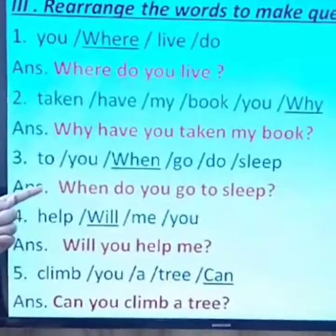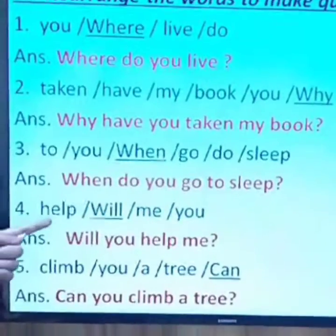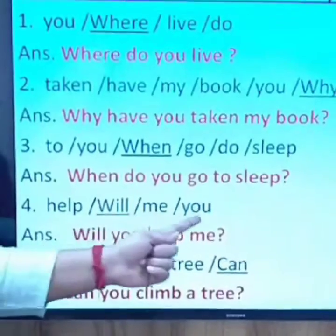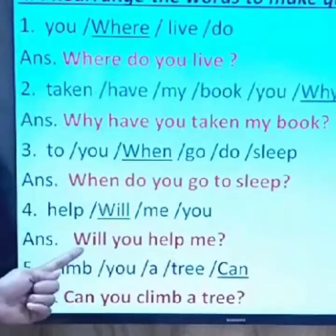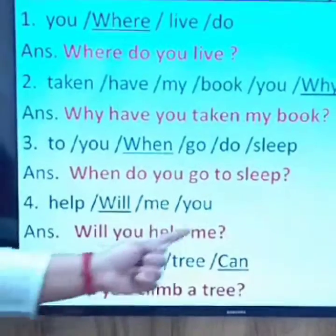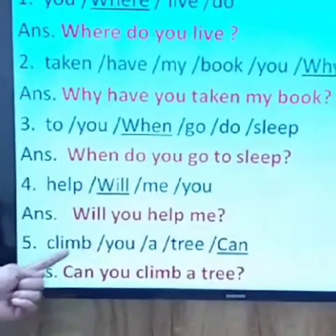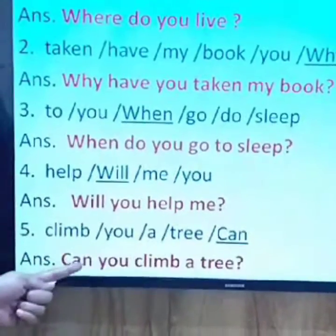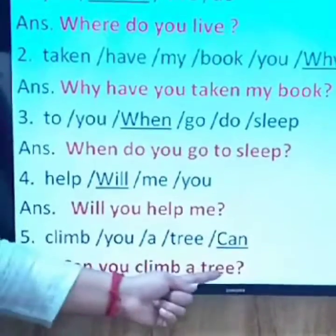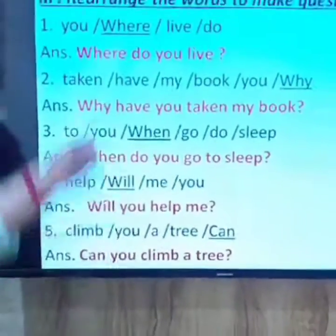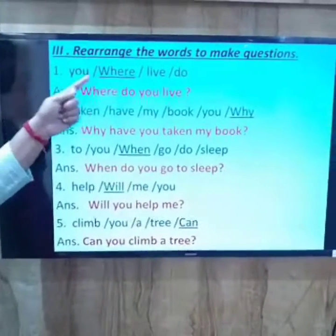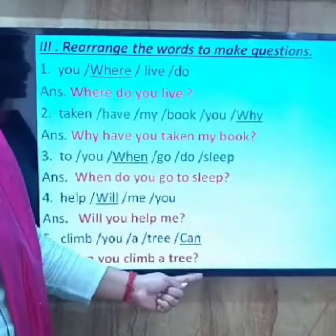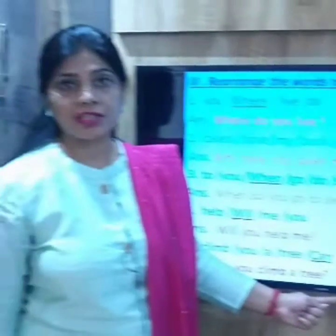Next: 'help will me you' — the sentence starts with the question word 'will': 'Will you help me?' Next: 'climb you a tree can' — question word 'can' first: 'Can you climb a tree?' In all these sentences, we put the question word at the beginning, complete the sentence, and end with a question mark — turning them into interrogative sentences.